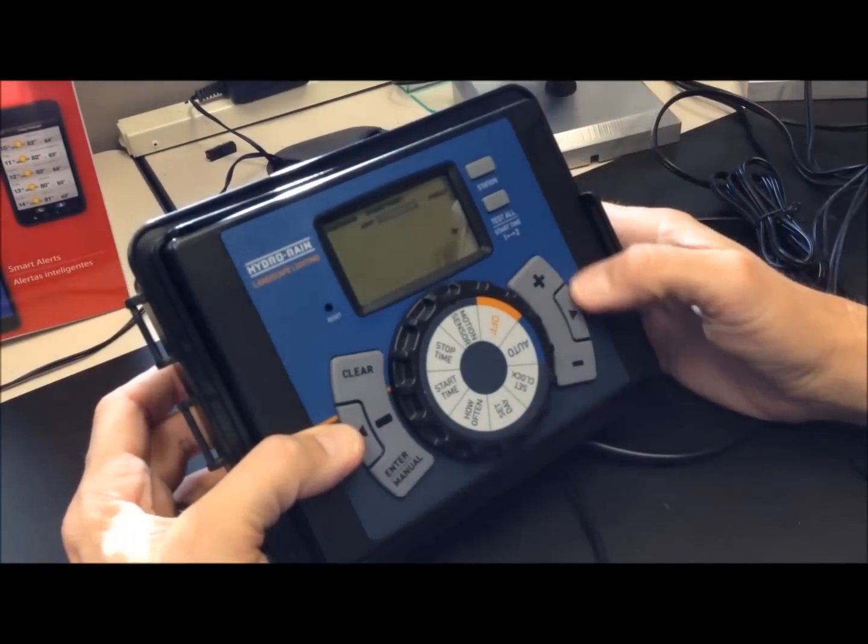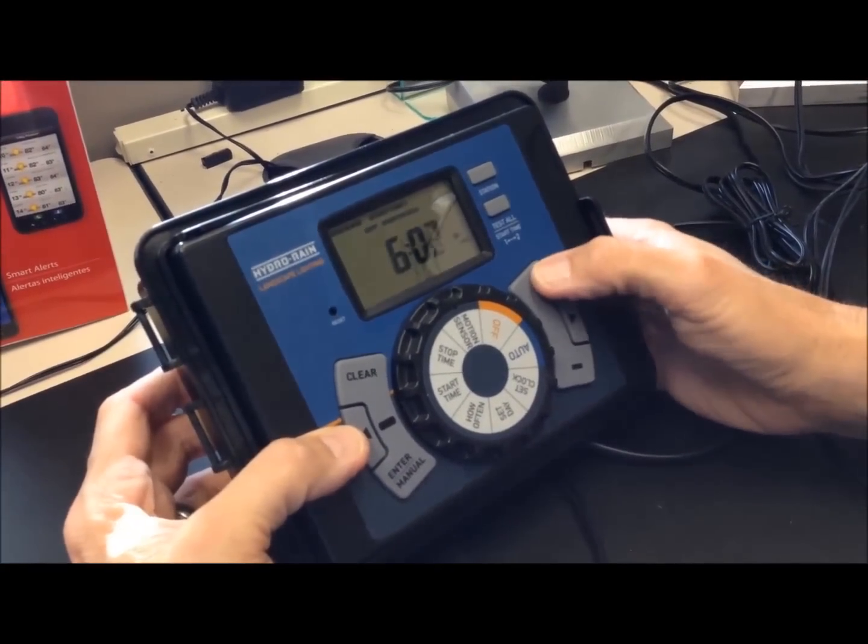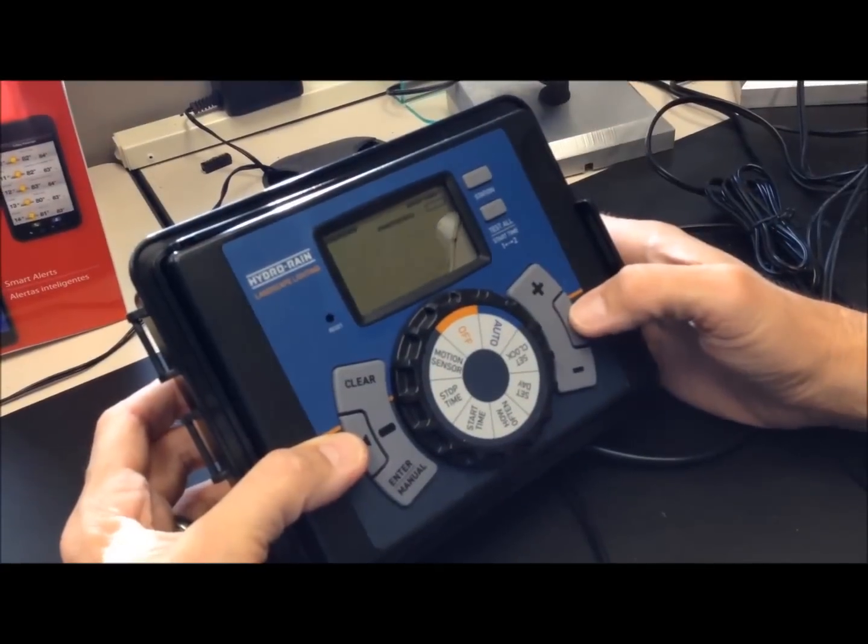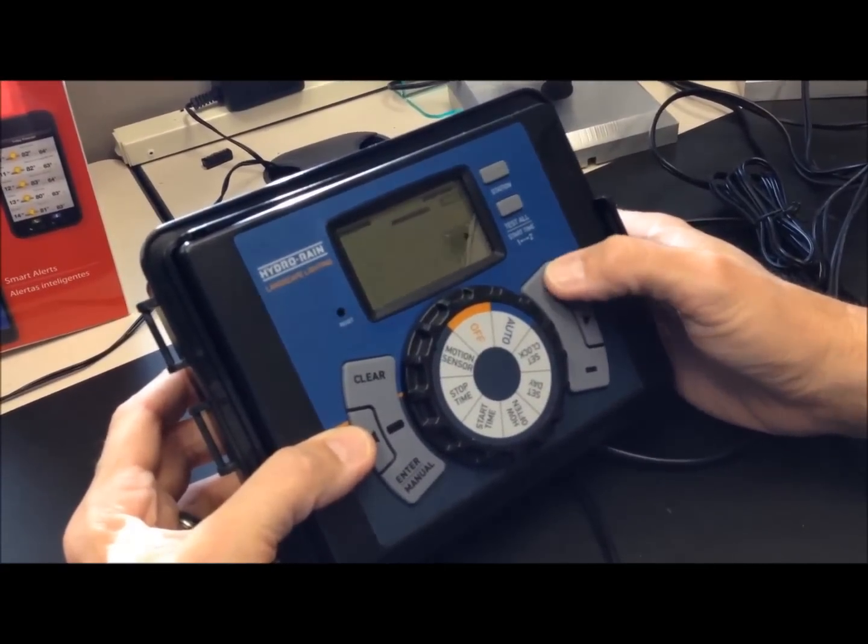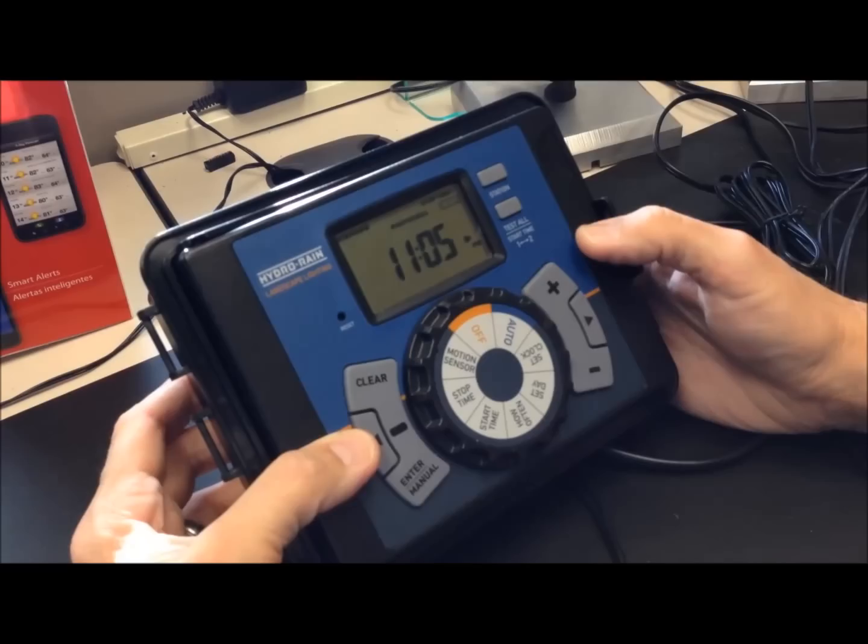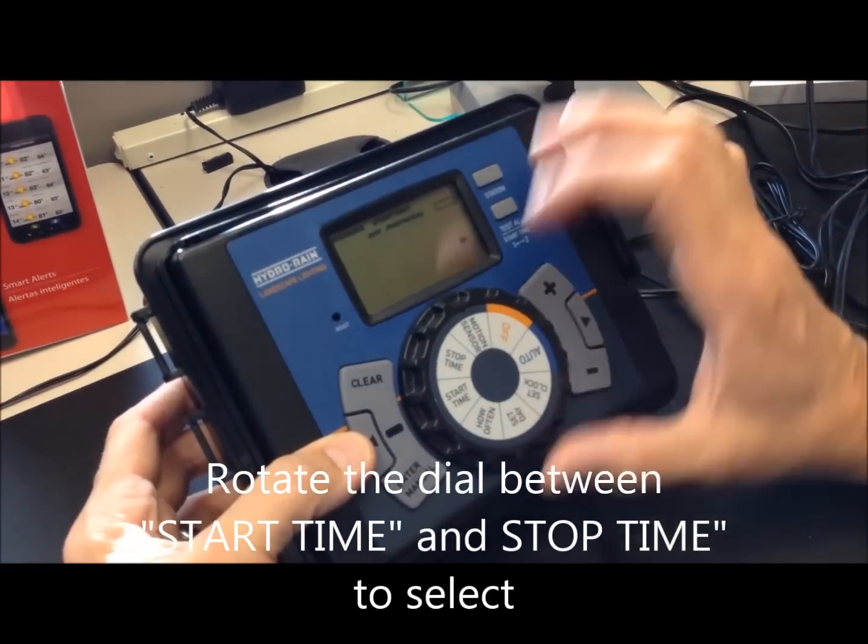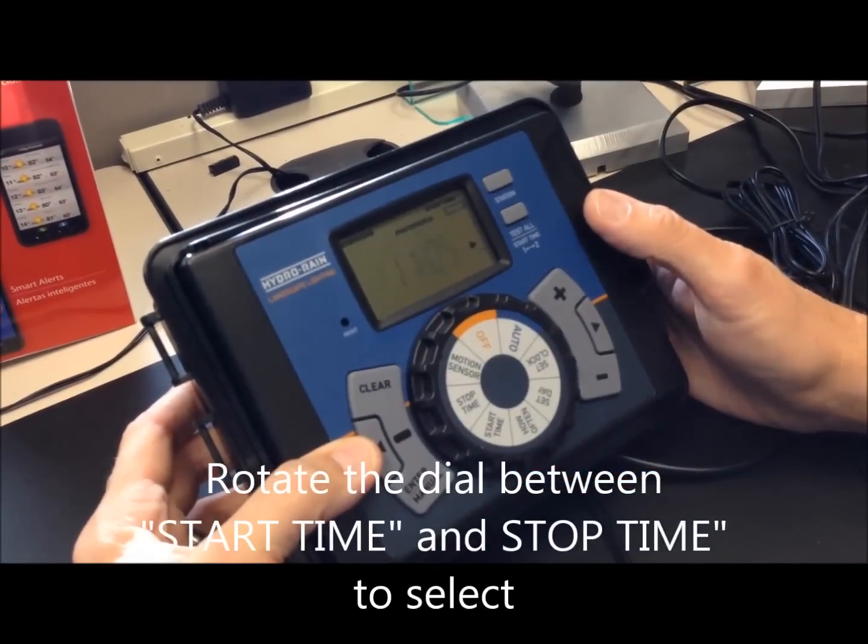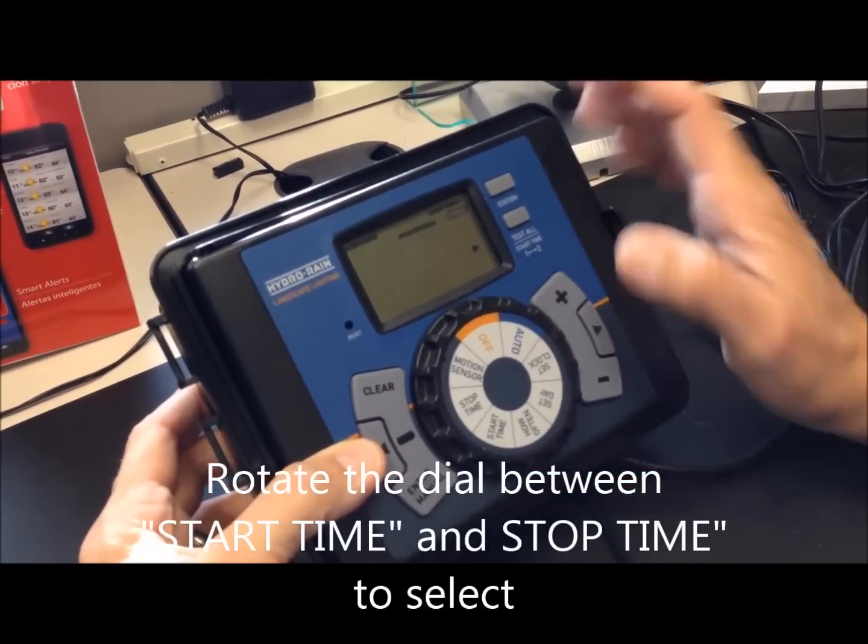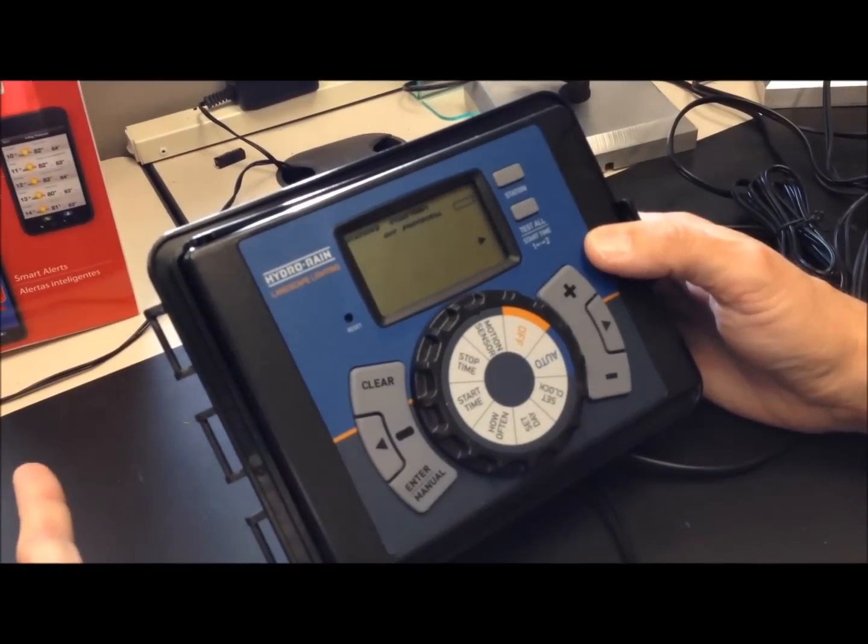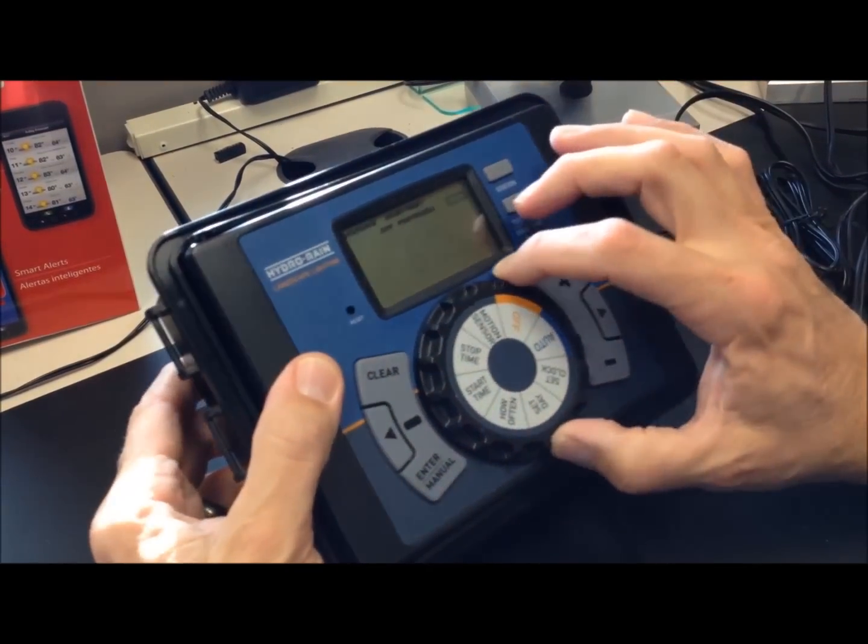So you set your start time, and then you can set your stop time. My lights will now come on at 6:05, and they will go off at 11:05. Or again, I could go to photocell, and they'll come on when it gets dark, and then they'll go off at 11:05.